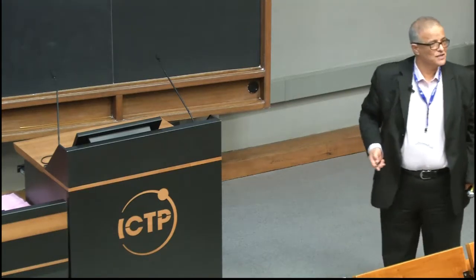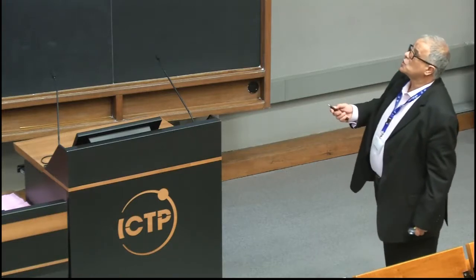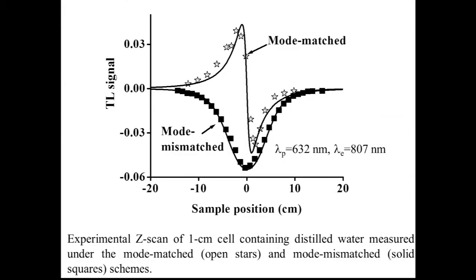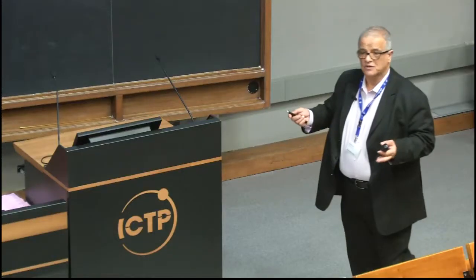Here is the experiment switching between mode-match and mode-mismatch, done with distilled water. I was using infrared from the titanium sapphire laser, which is good because water absorbs at about 10⁻² cm⁻¹ in infrared. I get a very nice picture. The signal being close to one means the effect is too big and the signal is no longer linearly proportional to absorption — but the signal is still there.